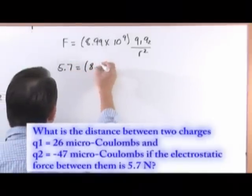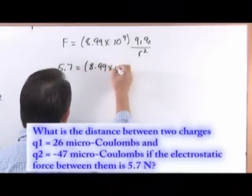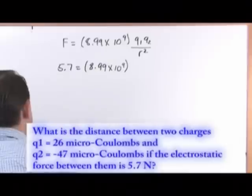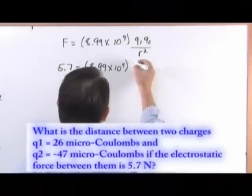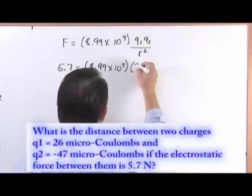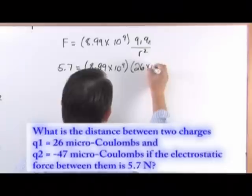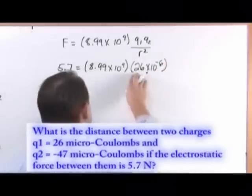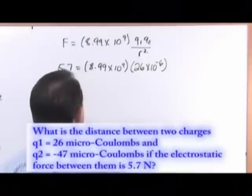So let me just go ahead and continue to write this down, 8.99 times 10 to the 9. Now what do I have for Q1 and Q2? Q1 is 26 microcoulombs. So that's 26 times 10 to the minus 6, because micro means 10 to the minus 6. 26 times 10 to the minus 6 coulombs.